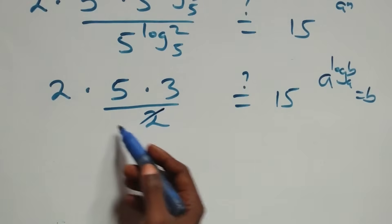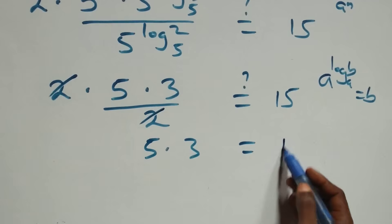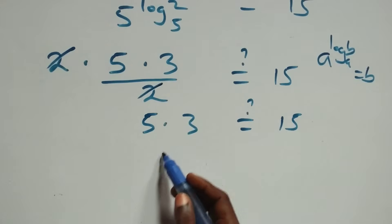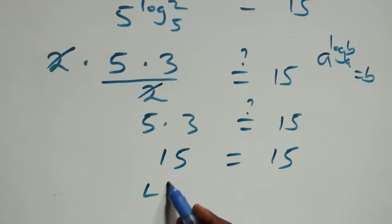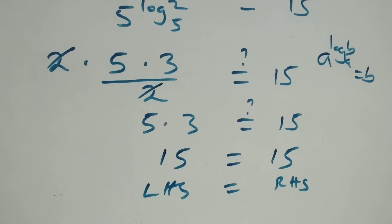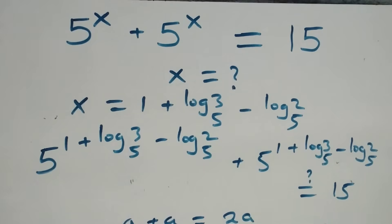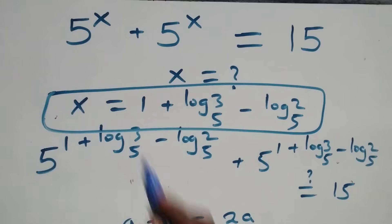These twos cancel each other. We have 5 times 3 equals 15 on this side. Of course, 5 times 3 is 15, which equals 15 here. The left-hand side equals the right-hand side. Therefore, we conclude that x equals to 1 plus log 3 base 5 minus log 2 base 5 satisfies this given problem.